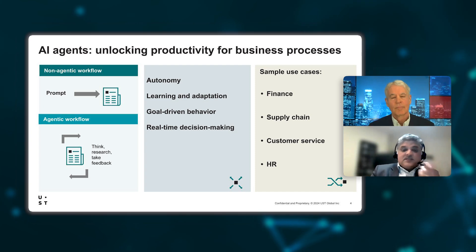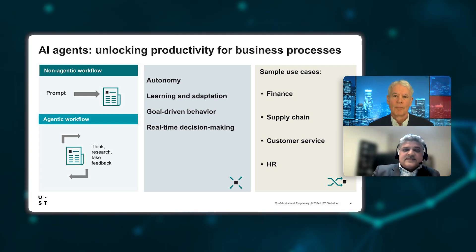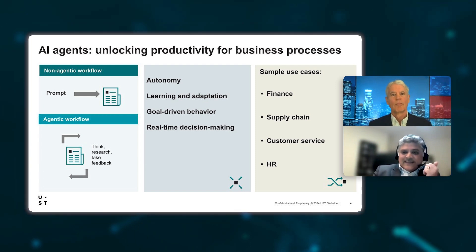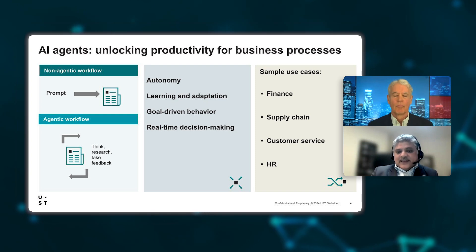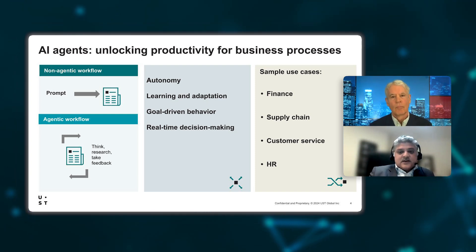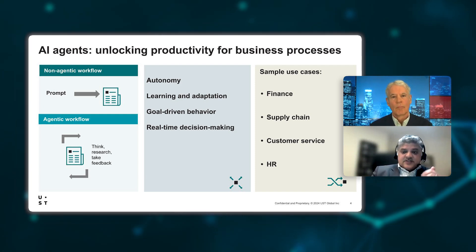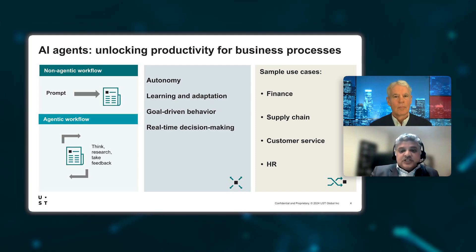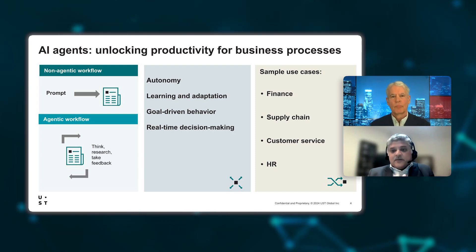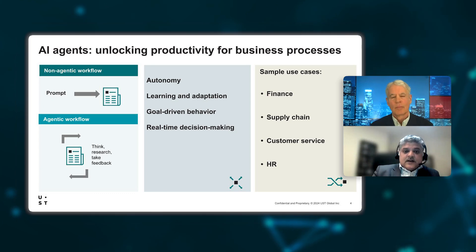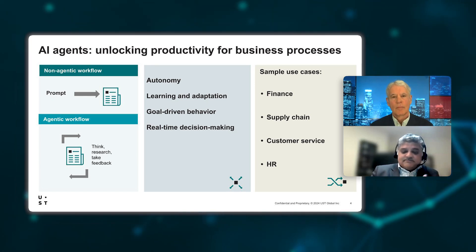Agentic AI is generating so much interest because it presents itself in all sorts of industries. In the finance industry, you could have autonomous trading bots that analyze financial markets in real time, assess risks, and execute trades — all without human oversight. In manufacturing, it can manage supply chains, control production workflows, or troubleshoot machinery issues autonomously, not only reducing downtime but also improving efficiency. It's proactively looking out for issues in machinery — it's not reactive anymore.